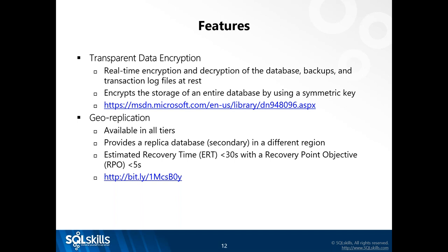You can set up automatic failover for redirects and create fault domains. What's impressive is that in the standard tier, your readable secondary can be any size within that tier — your secondary could be an S0, S4, or S12. If your read workload is more intense than your write workload, your secondary could be a higher tier than your primary. You can scale up and down as needed. And yes, you can manually force a failover to test geo-replication.